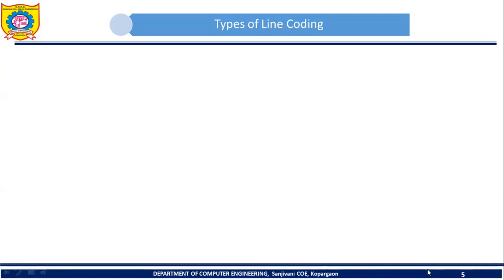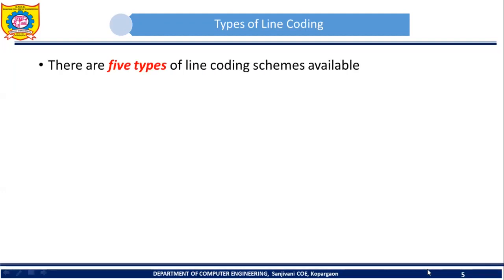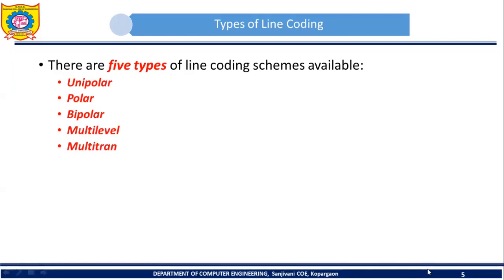Now let's see the different schemes available in line coding. There are a total of five types: the first is unipolar, the second is polar, the third is bipolar, the fourth is multilevel, and the fifth is multi-transition.